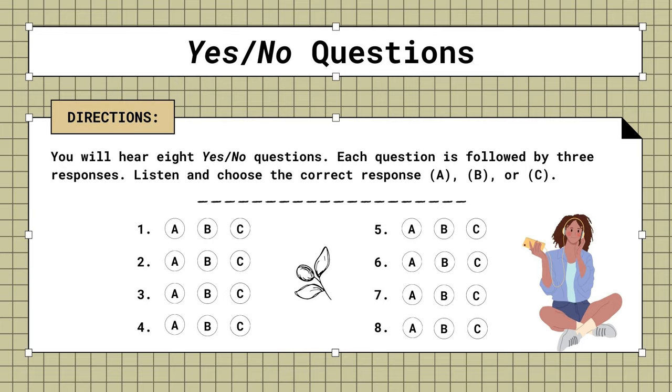3. Do you have Simon's phone number? A. I wrote it down somewhere. B. I wish I'd known. C. He works in personnel.